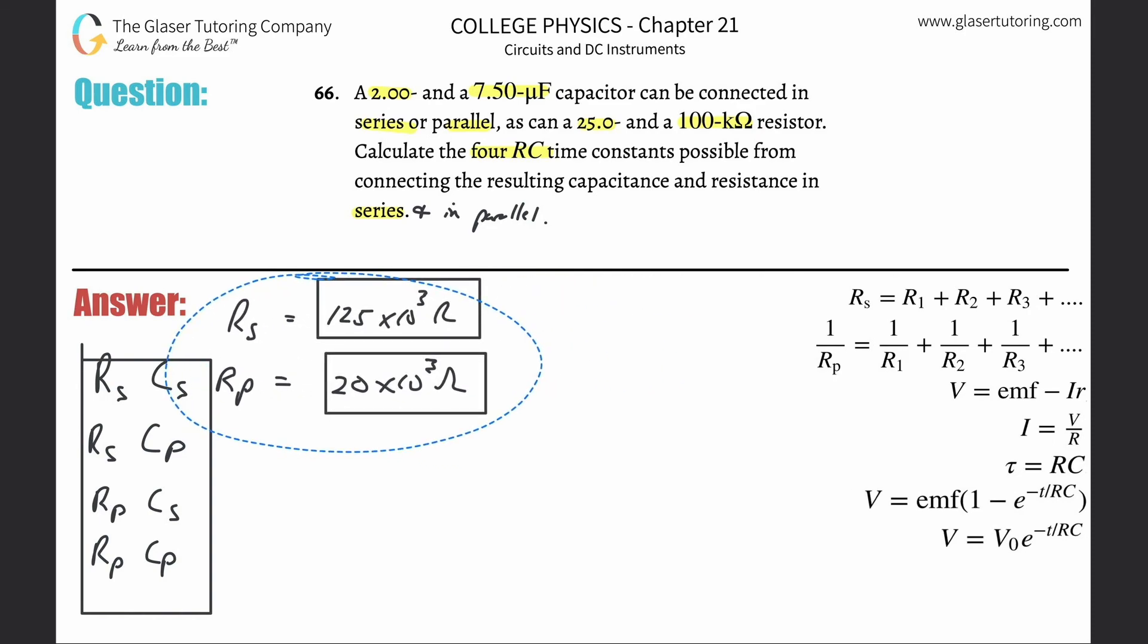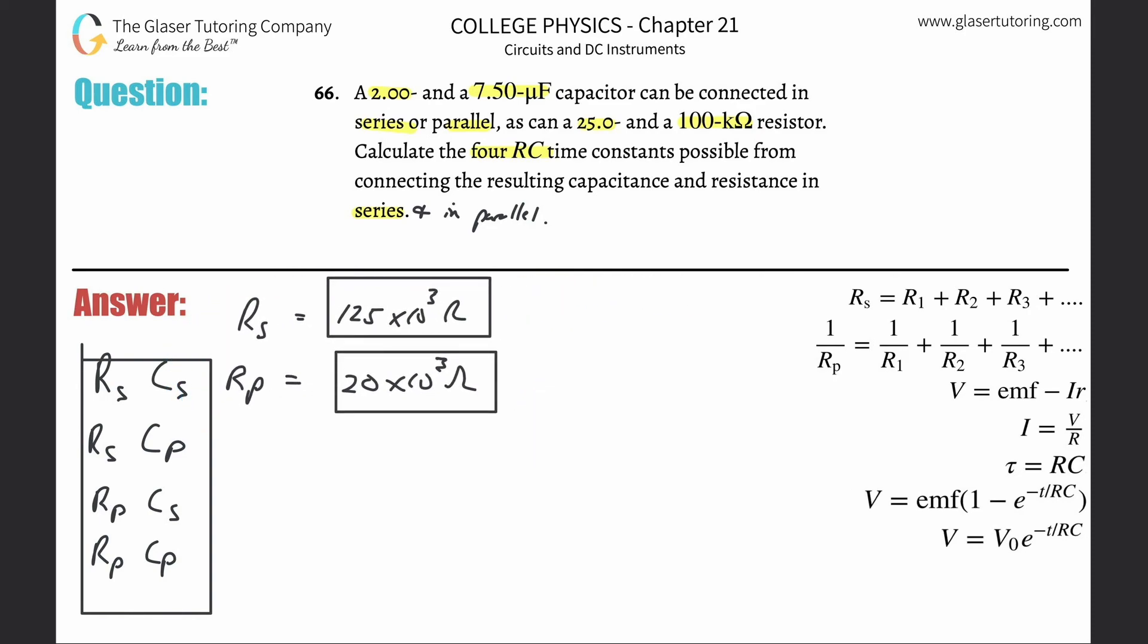Now we got to find the capacitance. The capacitance in parallel is just C1 plus C2—it follows the formula for series resistance. They're giving us 2 and 7.5 microfarads. Simply add them together: 2 plus 7.5 is 9.5 microfarads, but we need that in farads, so that's 9.50 times 10 to the minus 6 farads.